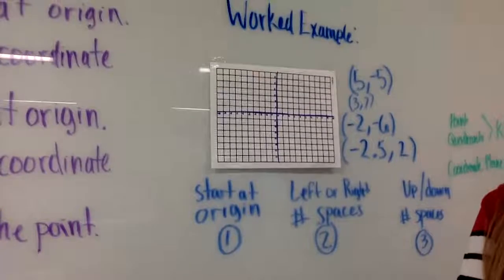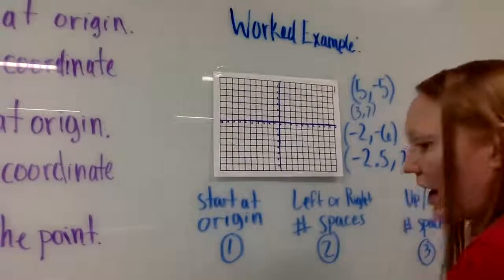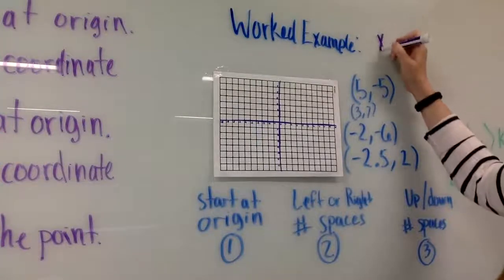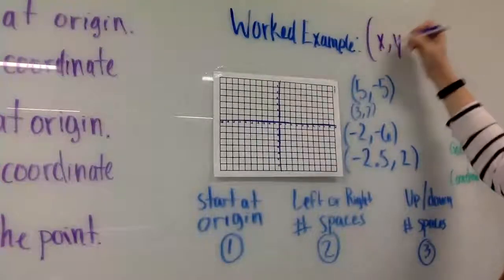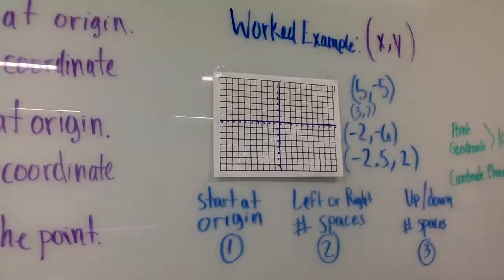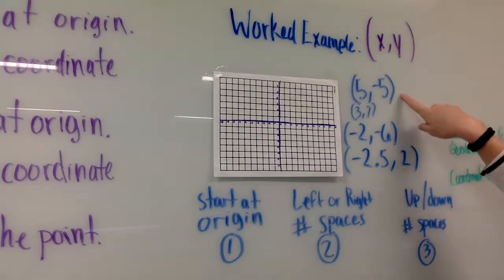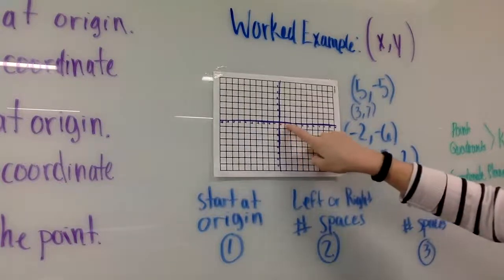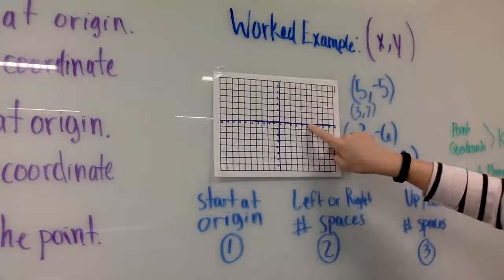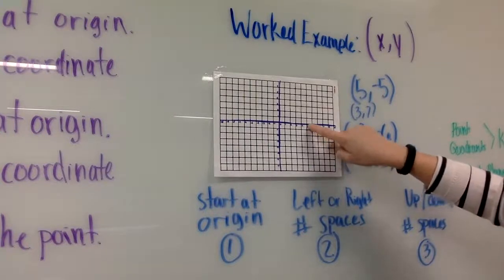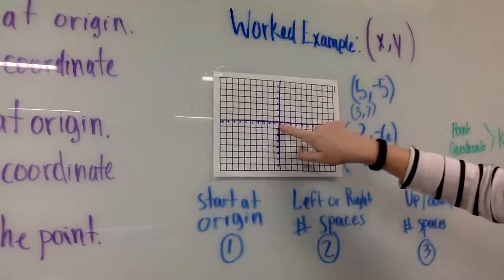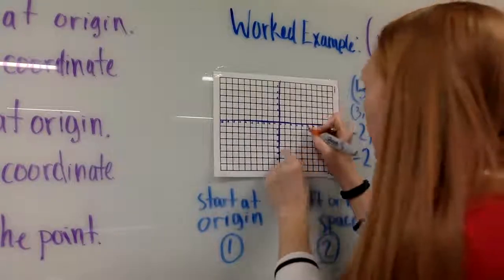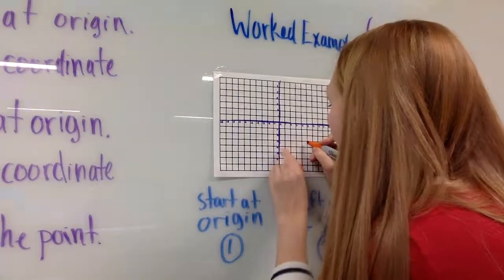Our first ordered pair is (5, -5). Ordered pairs are always in the form x comma y and always in parentheses. Starting at the origin, my x coordinate is positive five, so positive numbers go to the right. My y coordinate is negative five, so negative numbers go down. I go right five and down five, and I plot it there.